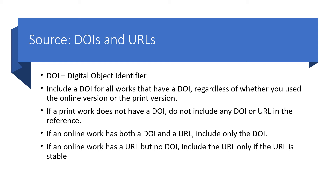The last part of your entry will include information about the source, including something called a DOI. DOI stands for Digital Object Identifier and is a unique set of letters and numbers for a specific source. APA prefers that you use a DOI over a URL, as URLs can change. If your work has both a DOI and a URL, use the DOI.